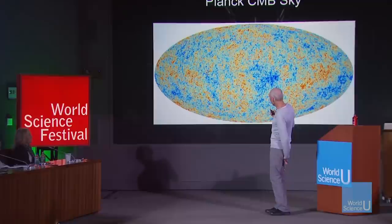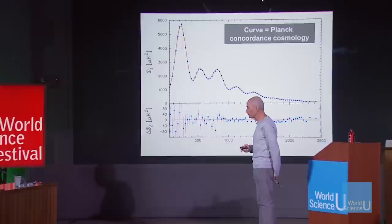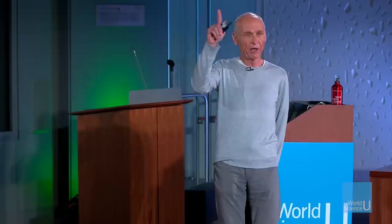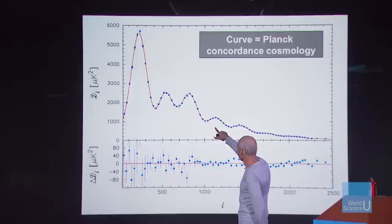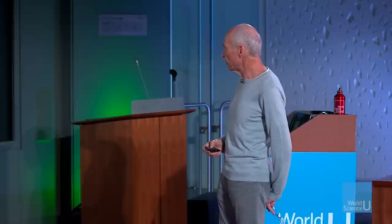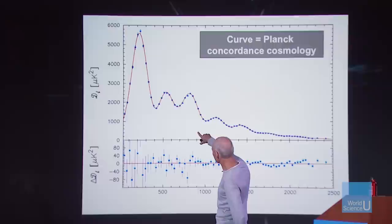When you analyze this and do a certain mathematical operation — measuring the temperature differences between spots on the sky — you get a curve. The blue are the data points and the red is the curve from the theory that involves inflation, dark matter, and dark energy. This is a pretty believable model. The experimentalists made these measurements, the theorists made the red curve, and they agree.